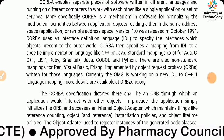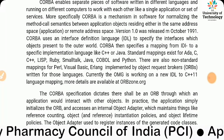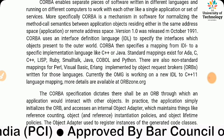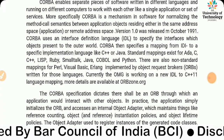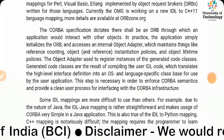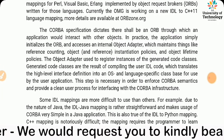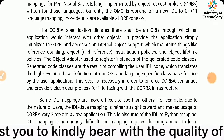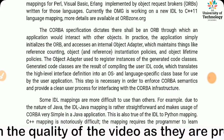There are also known standard mappings for Perl, Visual Basic, and Tcl, implemented by Object Request Brokers (ORBs) written for those languages. Currently the OMG is working on a new IDL language mapping; more details are available at orbjon.org. The CORBA specification dictates there shall be an ORB through which an application would interact with other objects.